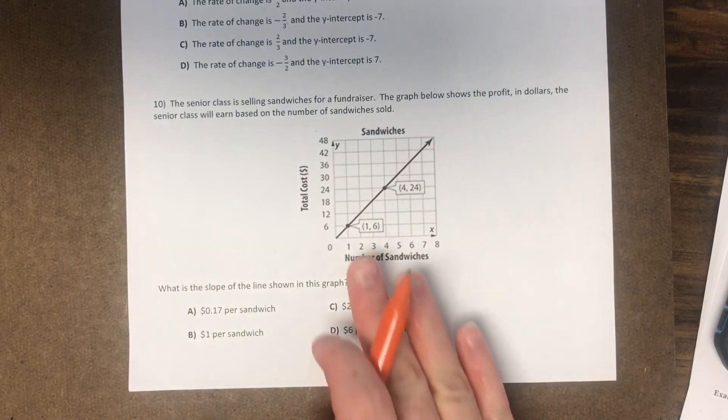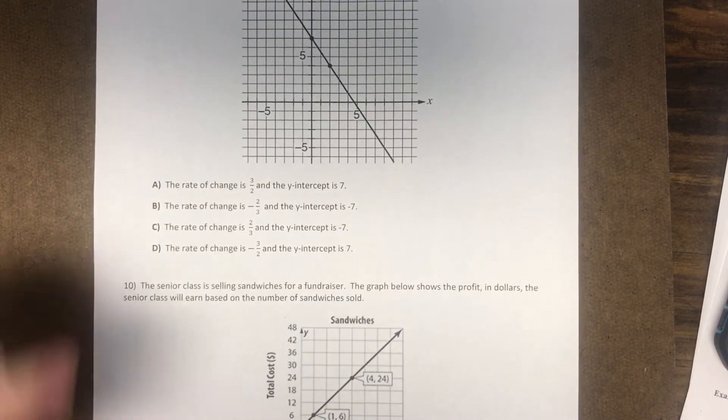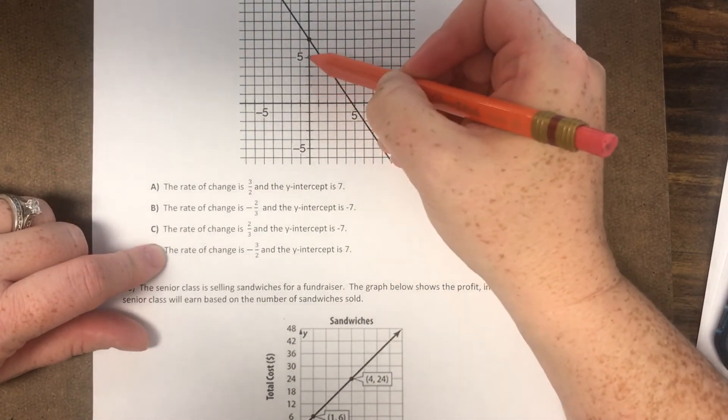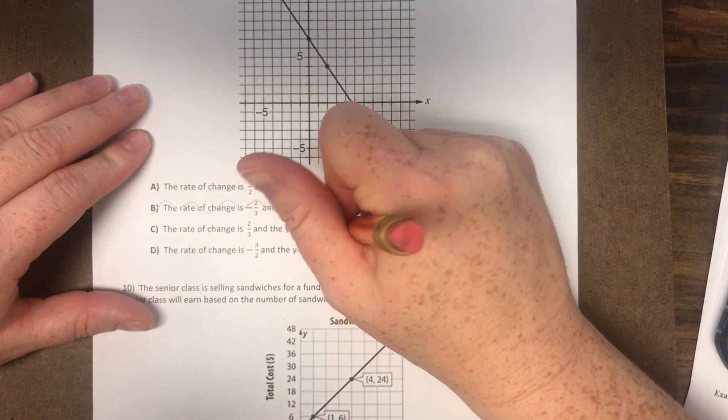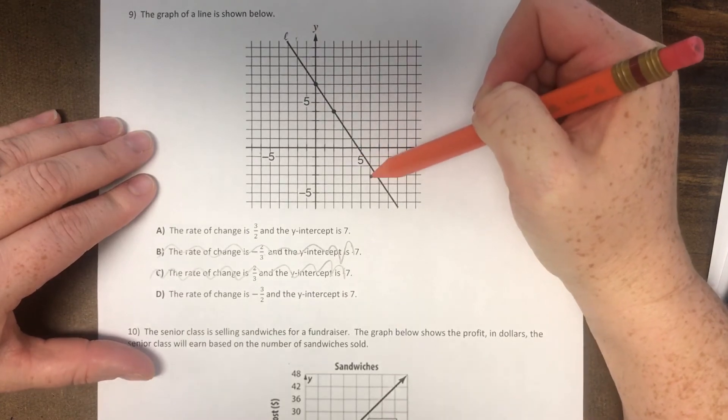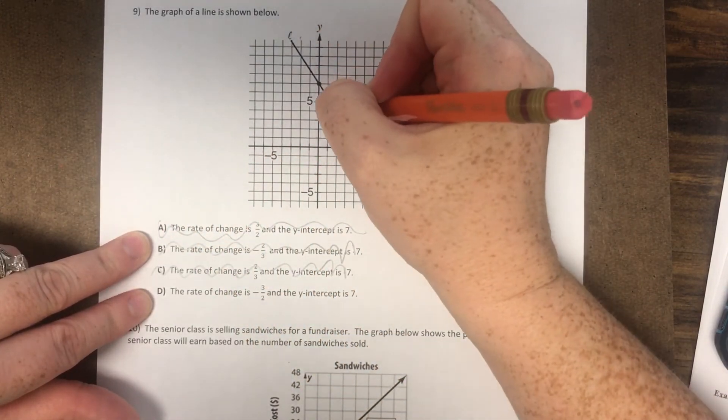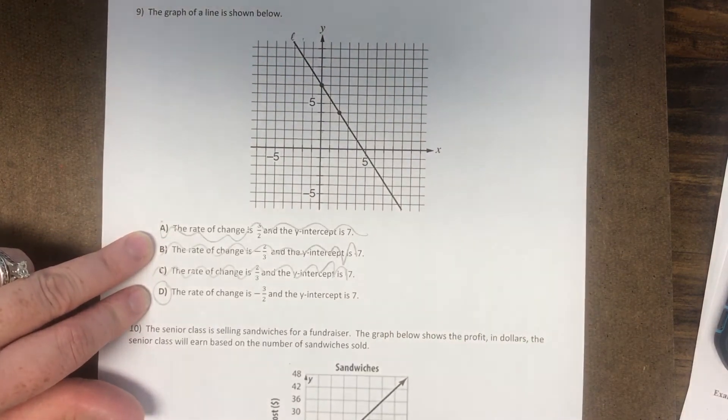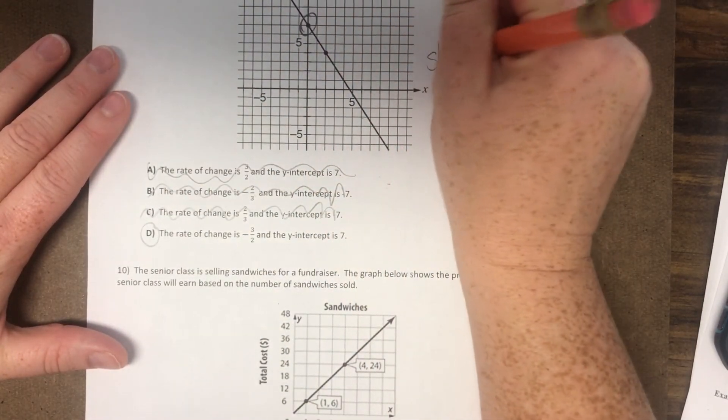Number 9. The graph of the line is shown below. So we're looking for the rate of change and we're looking for the y-intercept. So first look for the y-intercept. So our y-intercept is on 0, 1, 2, 3, 4, 5, 6, 7. It's positive 7. So you can mark out here. Notice that our line is going down. So that means it's a negative slope. So first of all, even if you look at that, there's only one answer that has a negative slope. And then you can look. It's rising 1, 2, 3 and running to the left 2. So that's a negative again. Our answer is D. So remember this y-intercept and then find the slope.